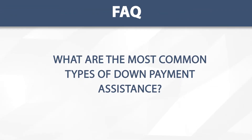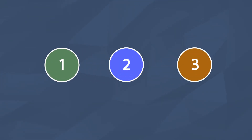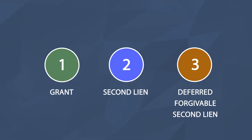What are the most common types of down payment assistance? DPA typically comes in one of three forms: a grant, a second lien, or a deferred forgivable second lien.